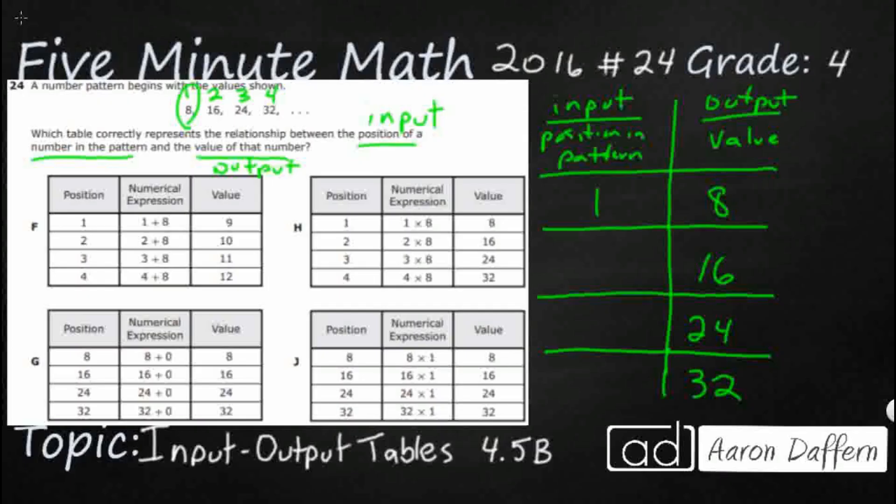So 8 is first, 16 is second, 24 is third, and then we've got our 32 that is fourth. And we're looking for the relationship, so that's really what we're looking for is this rule. How do we get from 1 to 8? How do we get from 2 to 16? We're going side to side since our two columns are side to side.